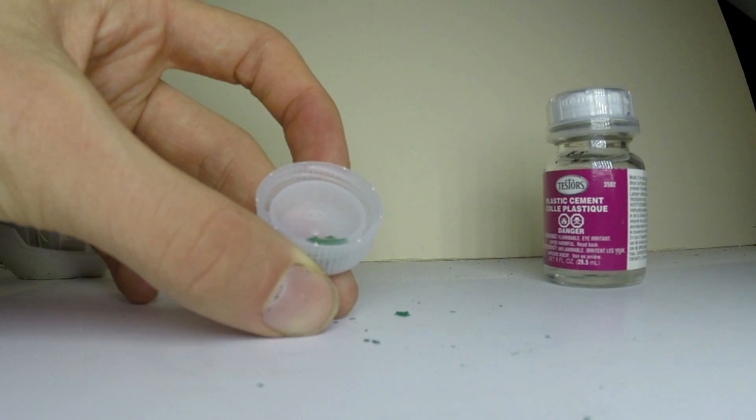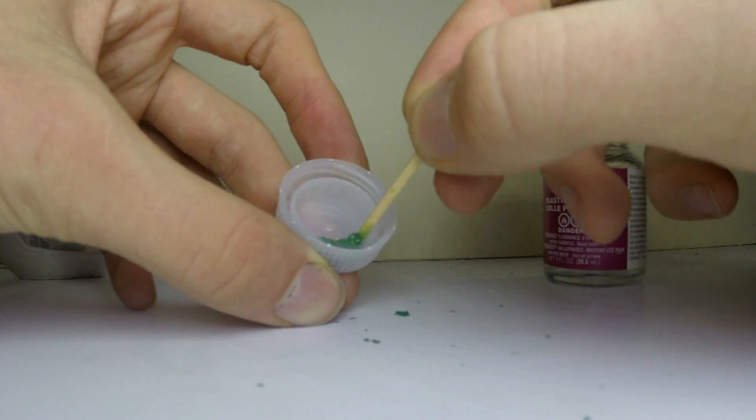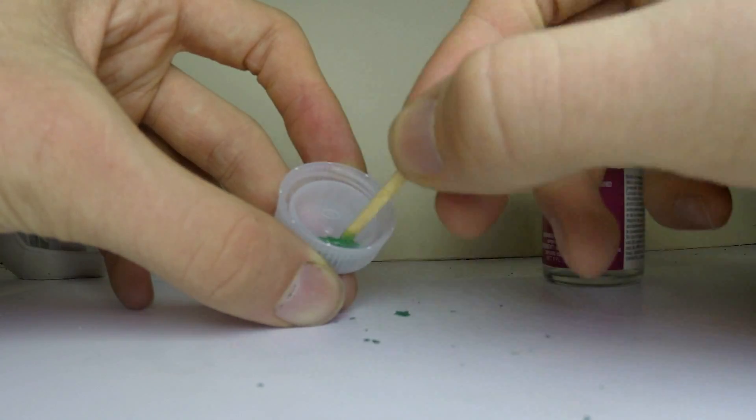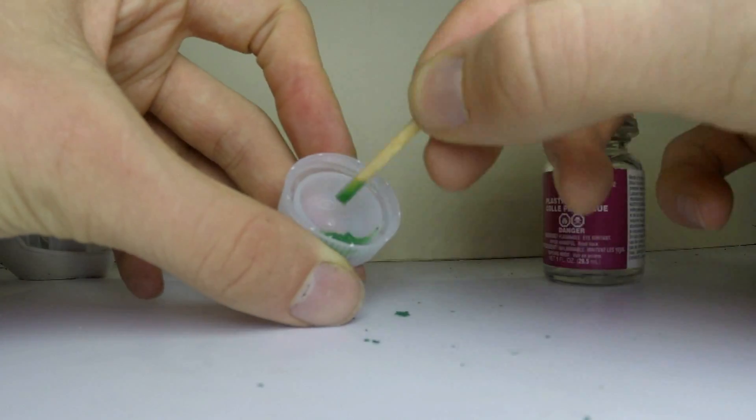Now what you will immediately notice is when you mix the putty and the glue together, all of a sudden it forms this nice thin slurry, if you will.